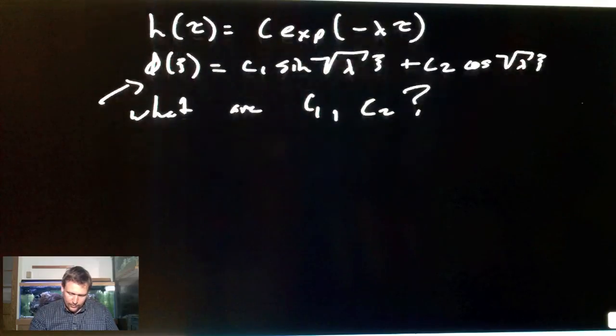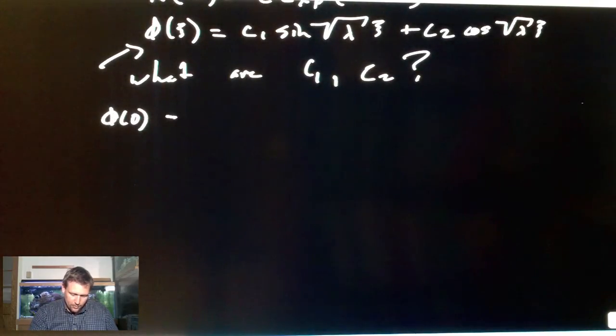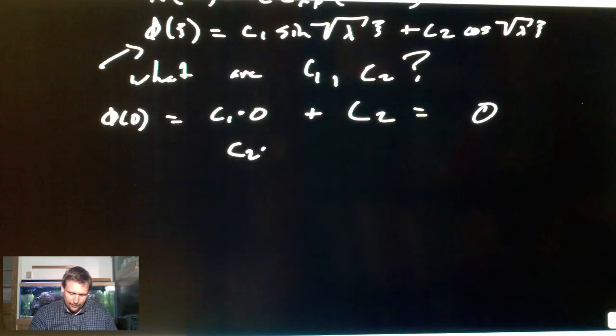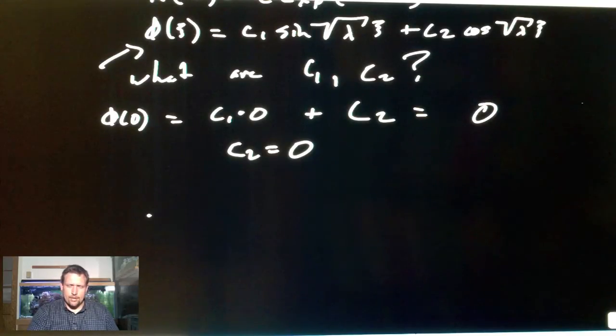Well, we can use boundary conditions. Phi at 0 equals what? Sine of 0 is 0. C1 times 0 plus cosine of 0 is 1. C2. So we have equals 0, of course, the boundary conditions. So C2 equals 0. So this is where the difference becomes apparent between doing a constant temperature condition versus a flux or a no-flux condition. And that starts to materialize in these constants. So for this example, C2 equals 0. In flux conditions, C2 does not equal 0.